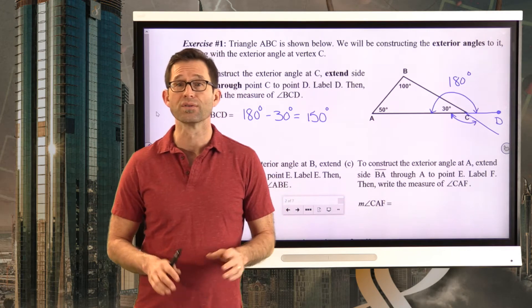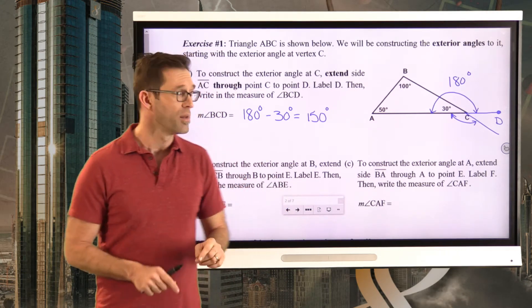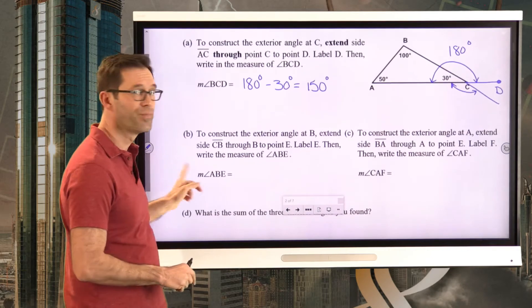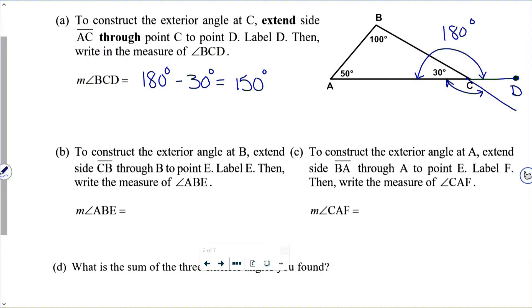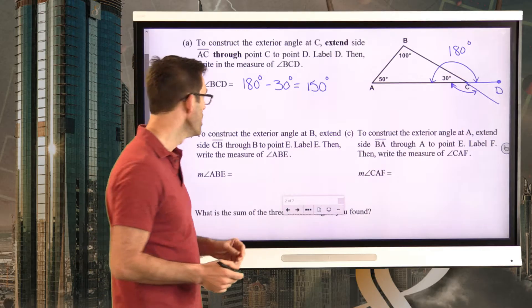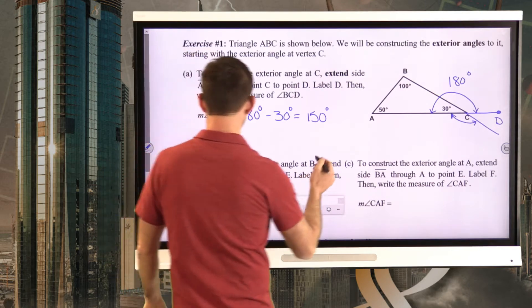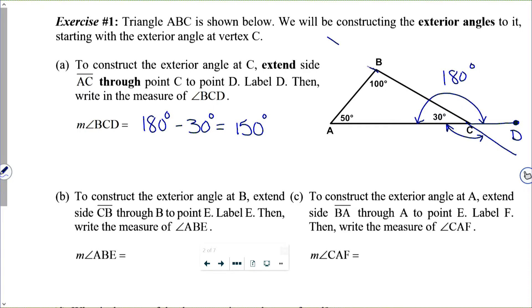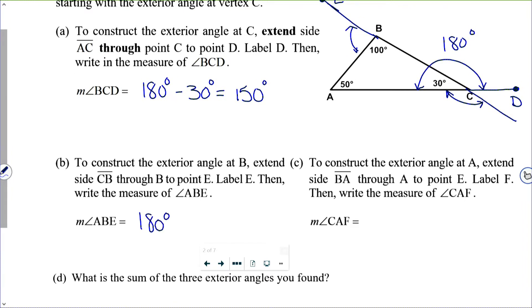Now let's draw the exterior angles at the other two vertices as well. Let's do one more together and then have you do the last one on your own. For letter B, it tells us to construct the exterior angle at B by extending side CB through B to point E, then write the measure of angle ABE. We're extending it out further and labeling this point E. This angle is simply going to be 180 degrees minus that 100 degree angle, giving us an 80 degree angle.